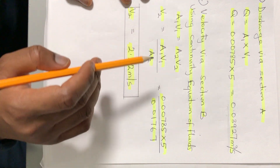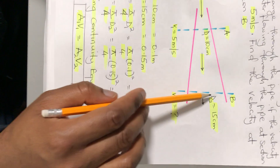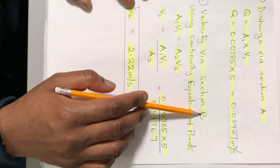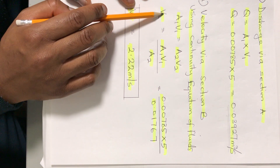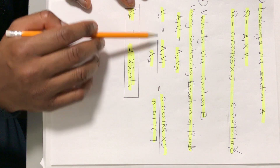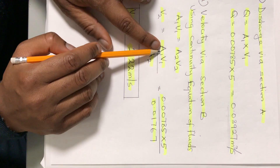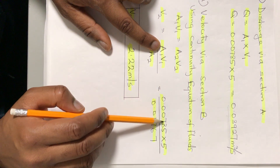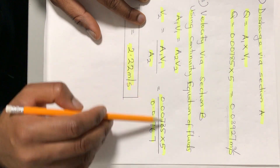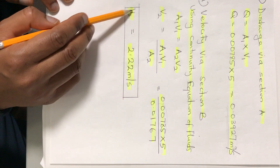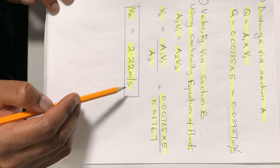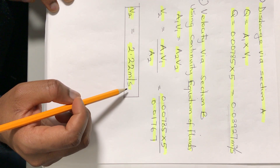Now we need to find the velocity at section B, which is unknown. Using the continuity equation A1 V1 equals A2 V2, we get V2 equals A1 V1 over A2, which is 0.007854 times 5 all over 0.01767. Calculating this gives us V2 equals 2.22 meters per second, which is the velocity at section B of the piping system.